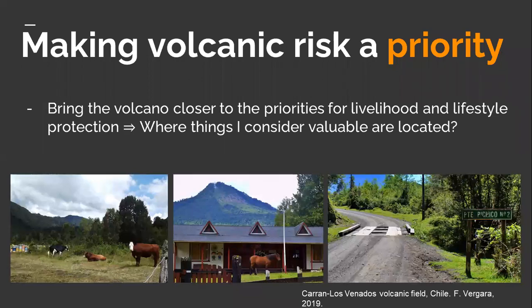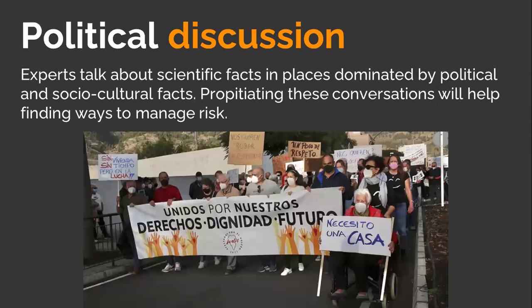Moreover, volcanic eruptions may have long-term effects on livelihoods and lifestyles, and sometimes poor handling when the crisis ends. Thus, prioritizing an honest conversation is beneficial. Despite scientists being called to be neutral and objective, getting closer to communities implies a unique degree of knowledge about the problem. Hence, facilitating a political dialogue and bringing important messages from the community to the stakeholders may help in managing risk.